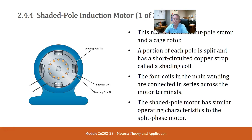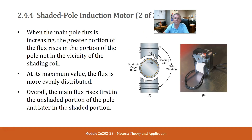Shaded pole induction motor. This motor has a salient pole stator and a cage rotor. A portion of each pole is split and has a short-circuited copper strap called a shading coil. The four coils in the main winding are connected in series across the motor terminals. The shaded pole motor has similar operating characteristics to the split phase motor. When the main pole flux is increasing, the greater portion of the flux rises in the portion of the pole not in the vicinity of the shading coil. At its maximum value, the flux is more evenly distributed. Overall, the main flux rises first in the unshaded portion of the pole and later in the shaded portion.